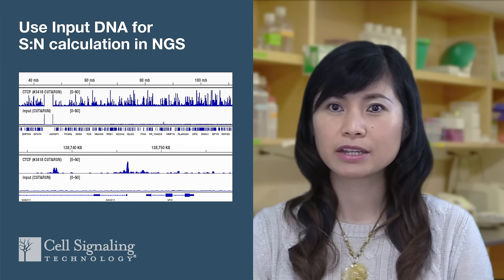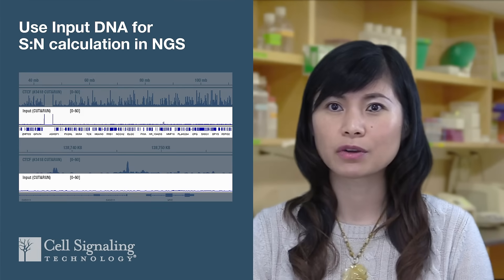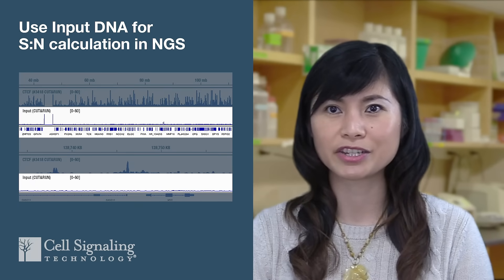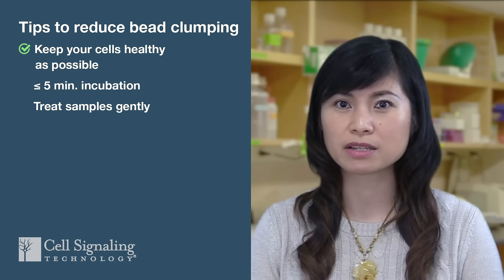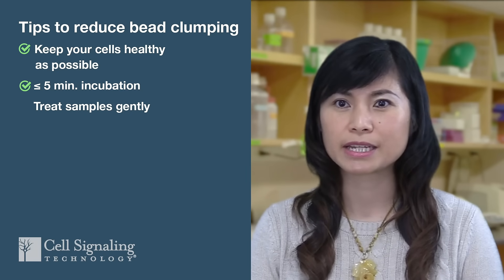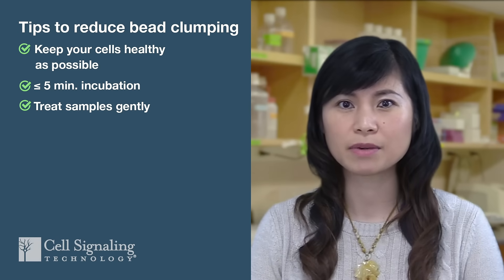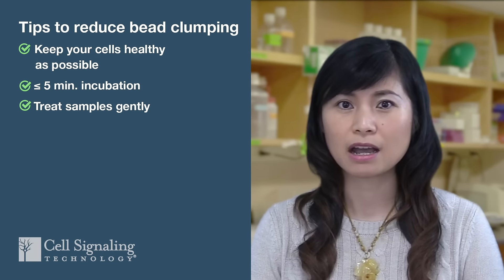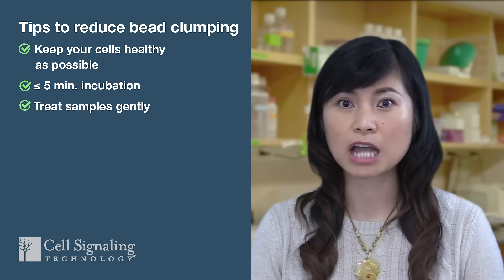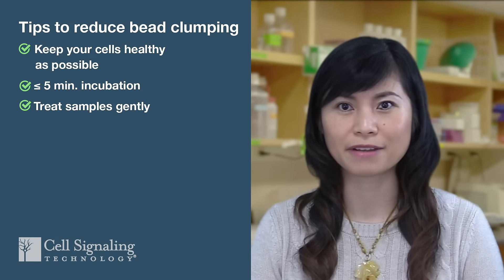For NGS analysis, include an input DNA control for signal-to-noise measurement. Input DNA is more diverse and has lower background in NGS compared to an IgG control. In CUT&RUN, concanavalin A-coated magnetic beads are used to isolate the permeabilized cells. Beads can aggregate or clump together if the cells are undergoing lysis rather than just being permeabilized. Make sure your cells are as healthy as possible before starting the protocol. Incubating cells with beads for no longer than 5 minutes and treating samples gently during the cell wash steps can help reduce bead clumping. That said, our internal testing results have shown that bead clumping does not negatively affect the final results of CUT&RUN experiments.